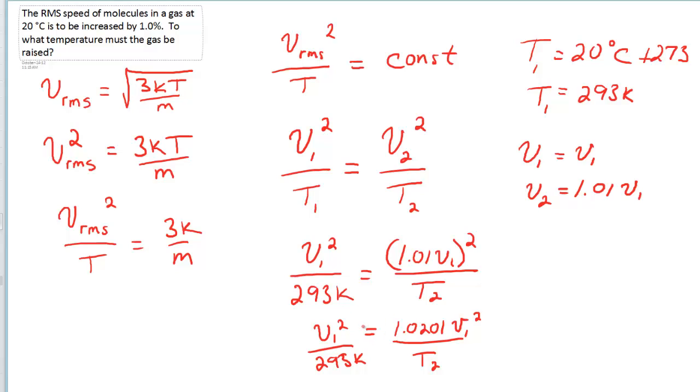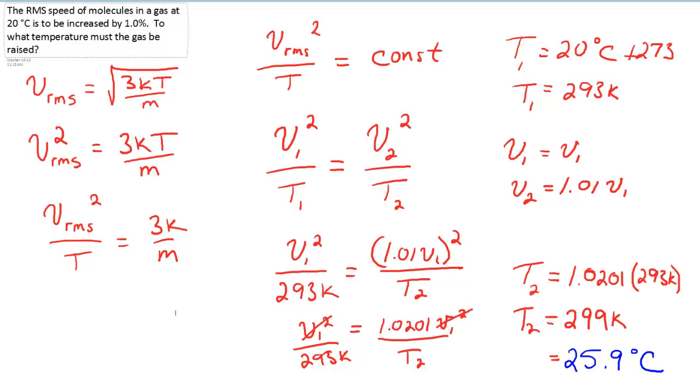So notice the V1 squared is actually canceled. It's the same on either side, so they're gone. A little bit of cross-multiplying on the right gives us T2 is 1.0201 times 293 Kelvin, which gives us 299 Kelvin, or ultimately when we convert back to degrees Celsius, 25.9.